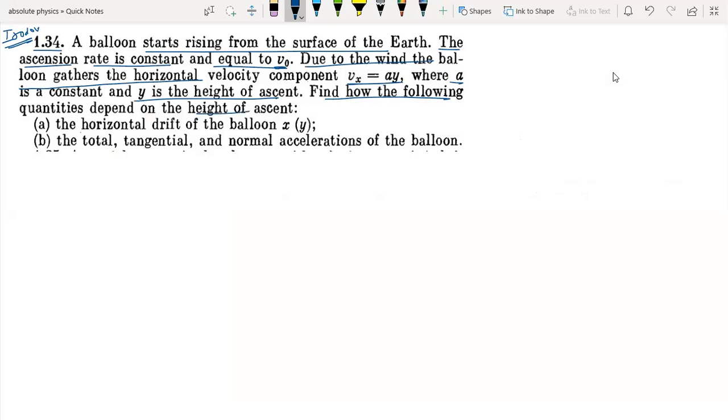We have to find horizontal drift as a function of y. The balloon is rising, so the balloon's velocity in y direction is constant. It is given constant rate v0. And in x direction, it is the wind that is equal to ay.